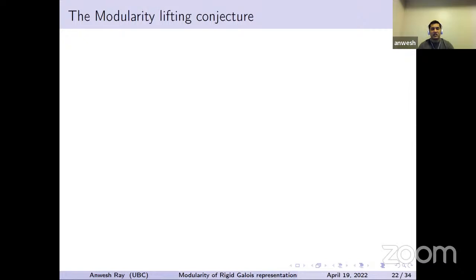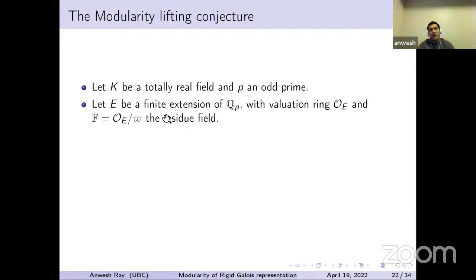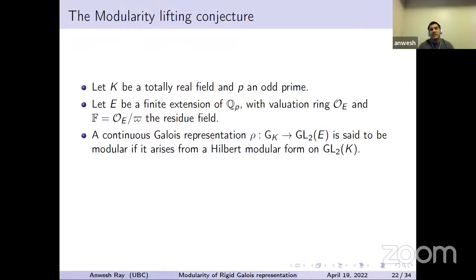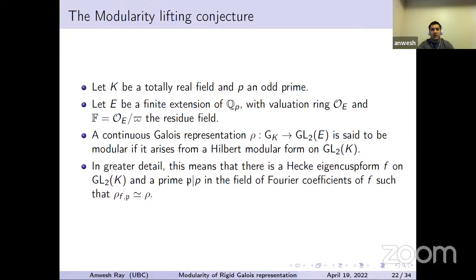Now let's talk about modularity of these representations and these families. We have a modularity lifting conjecture. K is a totally real field, P is an odd prime, E is a finite extension of Q_P, and O_E is the valuation ring — a DVR — with residue field F and uniformizer pi. Suppose we have a continuous Galois representation rho from G_K to GL_2(E). We say this is modular if it arises from a Hilbert modular form on GL_2(K) — more precisely, if there is a Hecke eigenform f and a prime above P in the field of Fourier coefficients such that the associated representation matches rho.